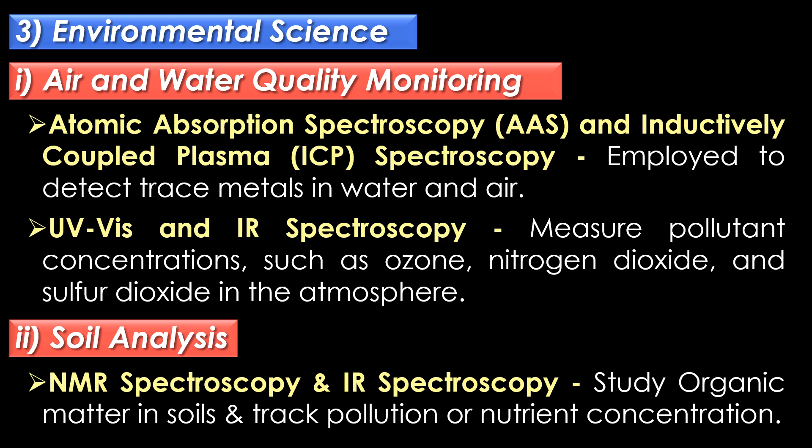In environmental science, spectroscopy is used for air and water quality monitoring and soil analysis. Atomic absorption spectroscopy and inductively coupled plasma spectroscopy are employed to detect trace metals in water and air. UV-visible and IR spectroscopy are used to measure pollutant concentrations such as ozone, nitrogen dioxide and sulphur dioxide in the atmosphere.